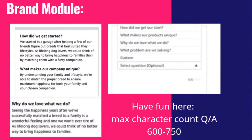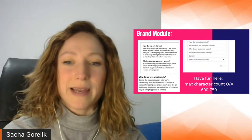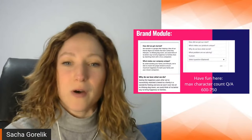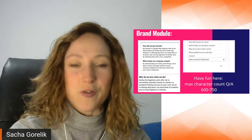Then there's the brand module with standard questions Amazon gives you: how did we get started, what makes our company unique, why do we love what we do, and what problem are we solving for customers. They also have the option to make up your own question — it doesn't have to be a question, it could be a statement, your three main brand values, or your favorite customer story. You can get really creative here. Don't just go with the boring story of how you had a problem and decided to make a business out of it — that story gets a little old.